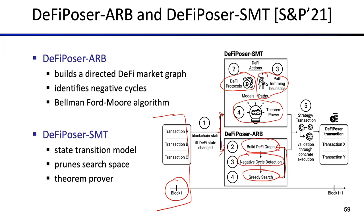The output from this market analysis is a particular trade to execute. For example, it might say: go to Uniswap, exchange Ether to DAI, then go to SushiSwap and exchange DAI back to Ether — that's a simple arbitrage circle. There are also much more complex trades that can be found through these automated tools. Before you broadcast the transaction, you can execute it locally to perform a validation through concrete execution at a particular block height.